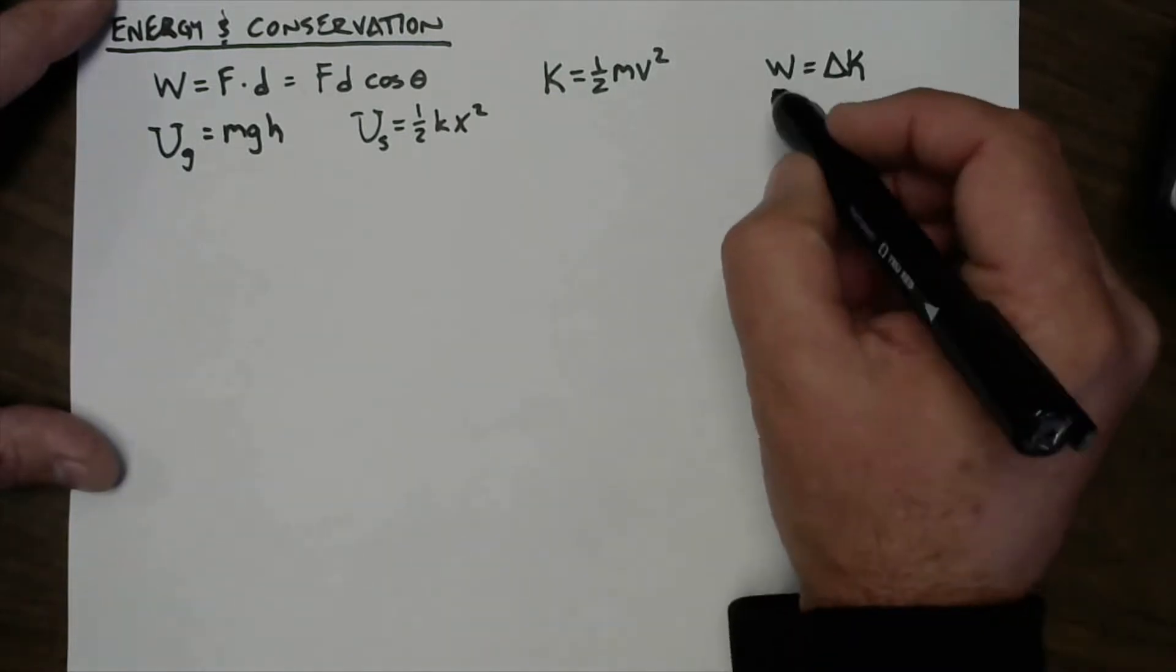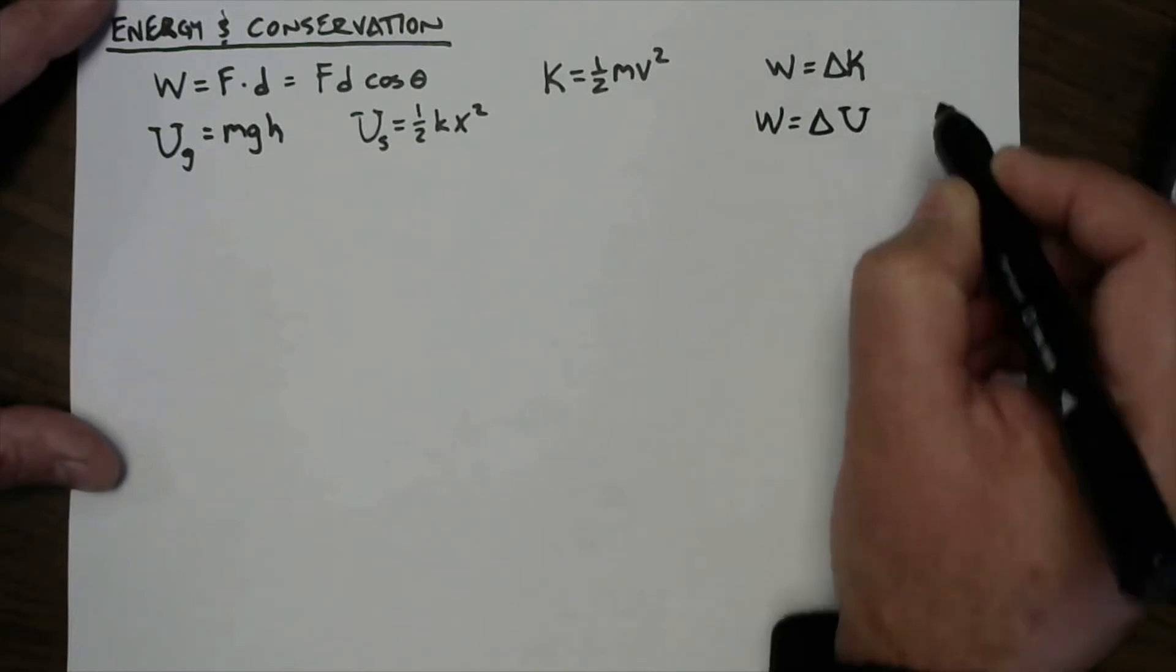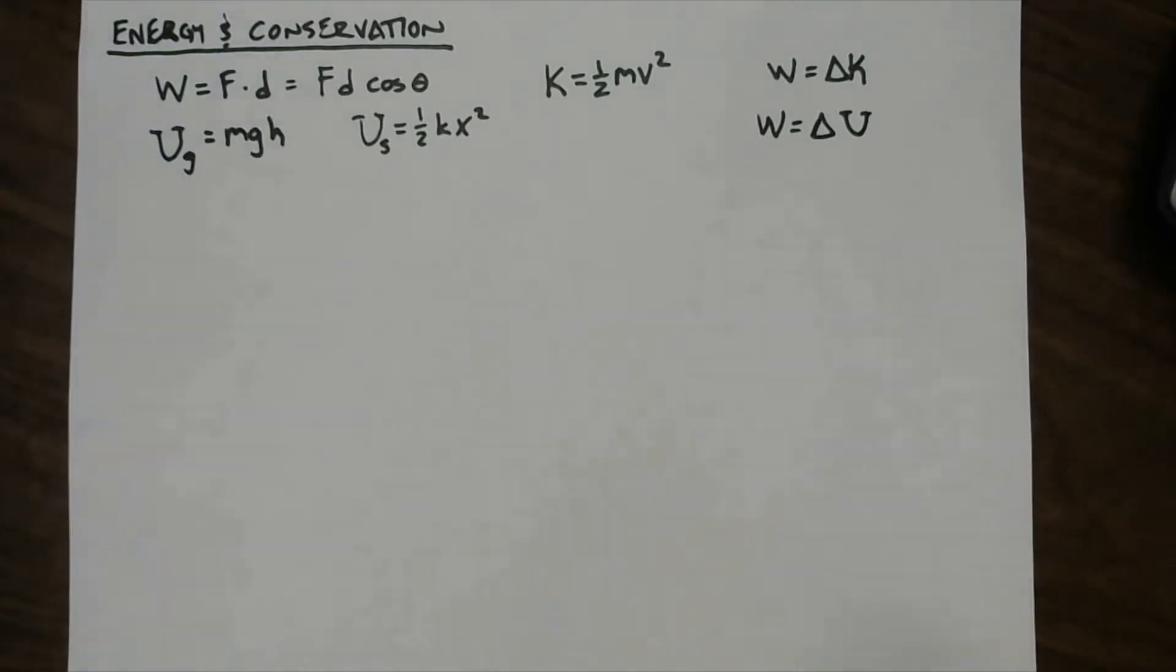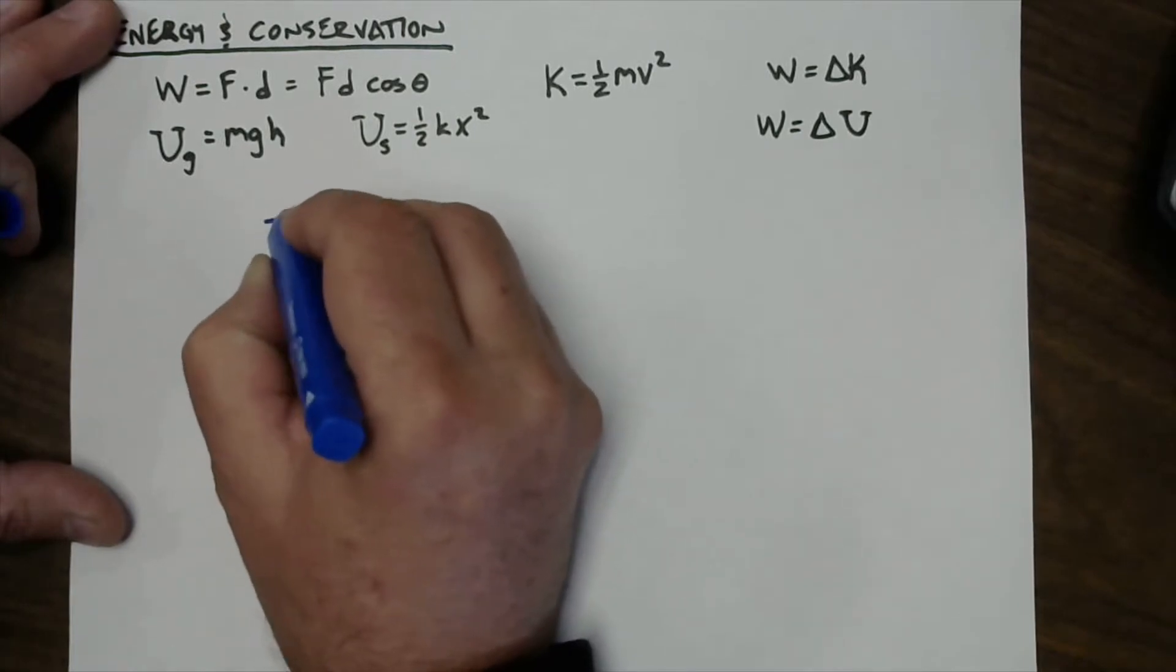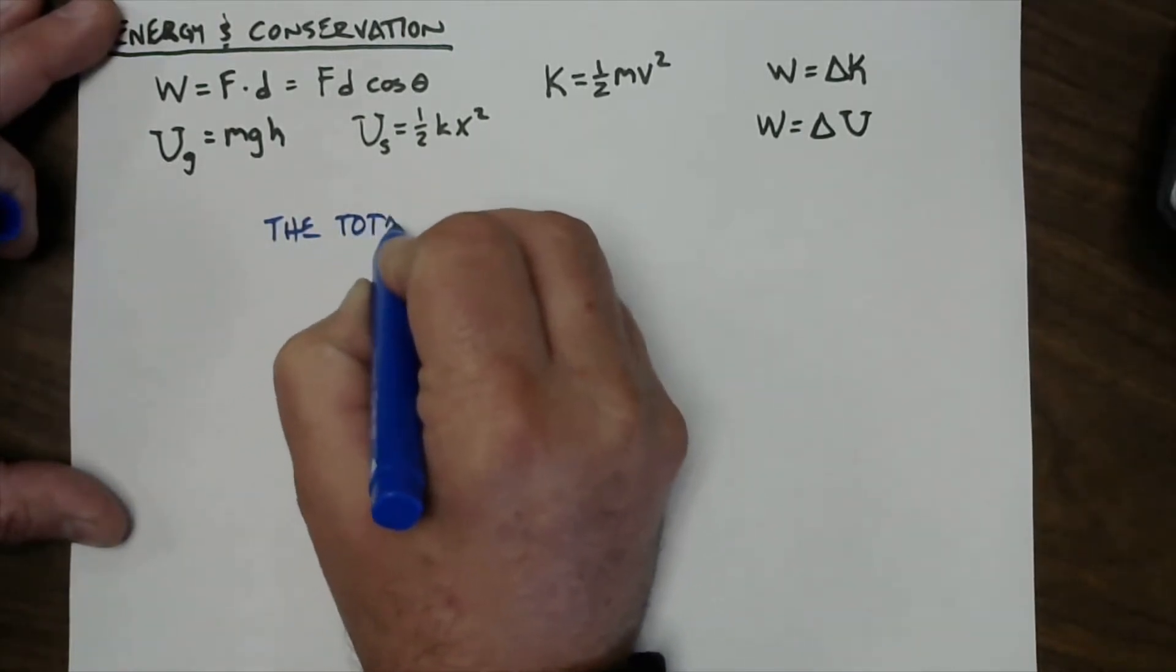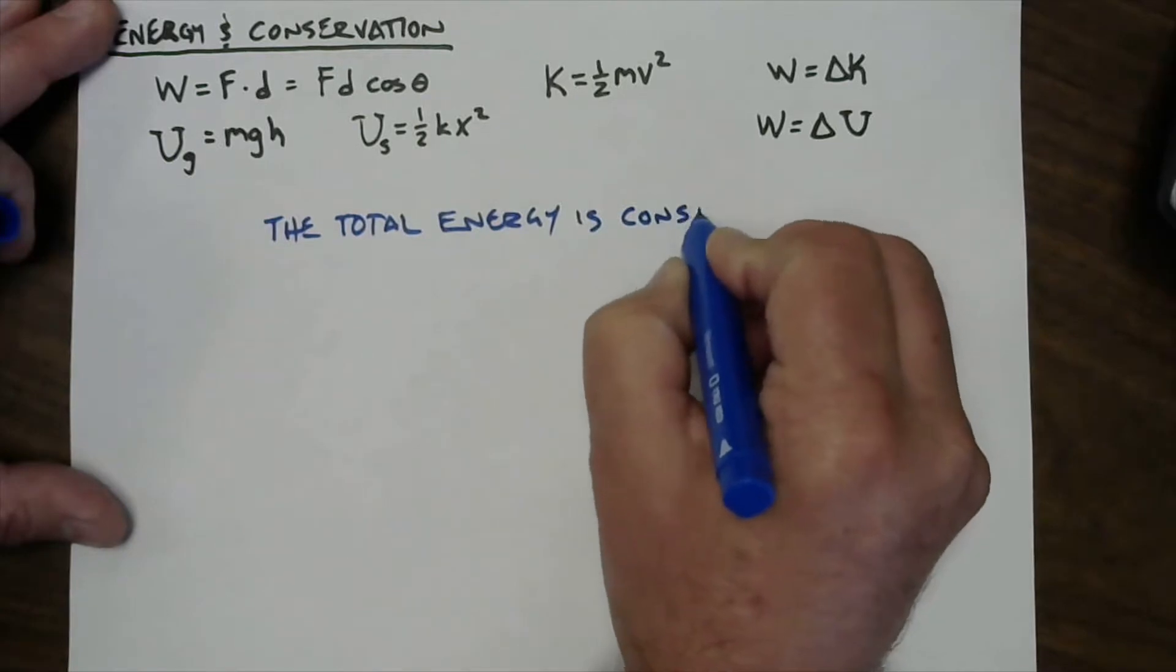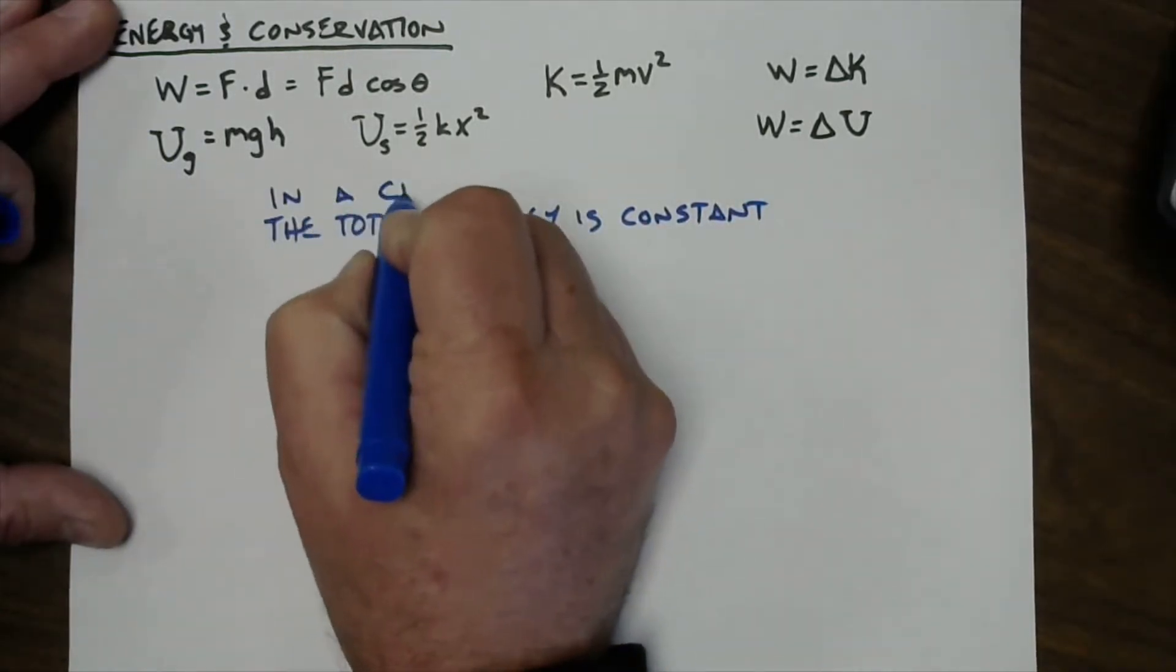But as we do examples, we'll get into this. The basic idea is that the work can also go into changing the potential energy of something. Basically, the law of conservation of energy says that energy can neither be created nor destroyed. It can only change forms. And I like to write it as the total energy is constant.